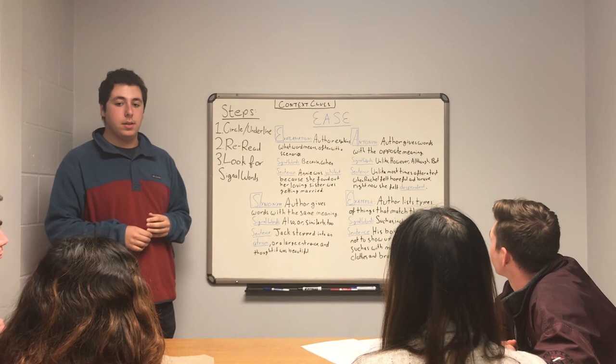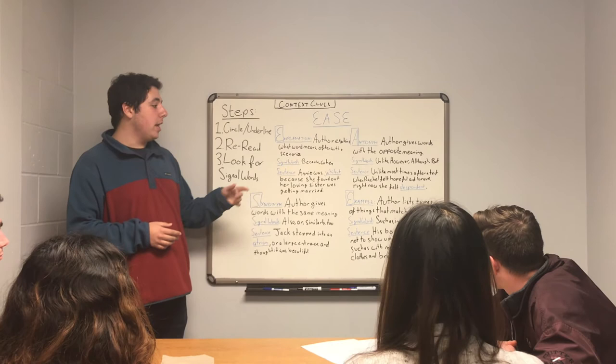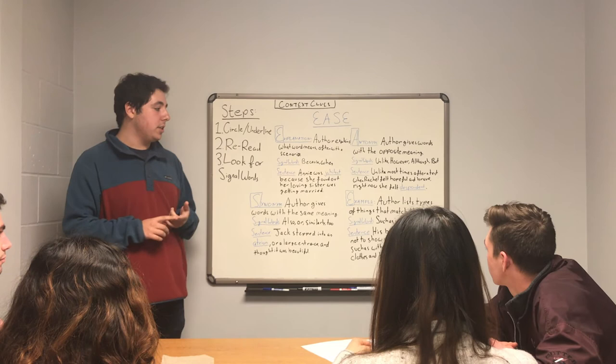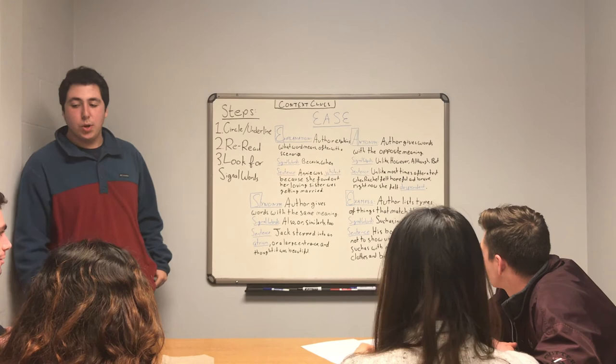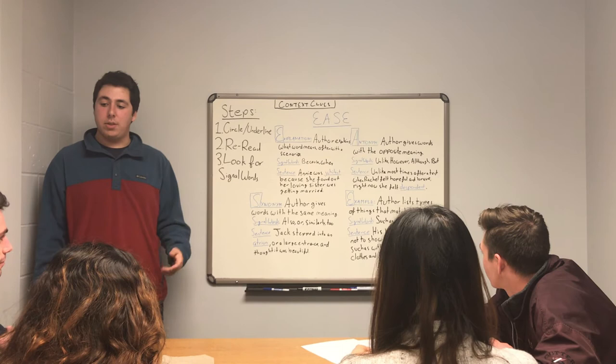Finally we have Example — when the author lists types of things that might match the word. Signal words for this are 'such as,' 'including,' and 'for instance.' Nick reads: 'His boss warned him not to show up to work unkempt, such as with messy hair, dirty clothes, and broken shoes.' Unkempt means messy and unorganized, because the author uses 'such as' followed by examples.